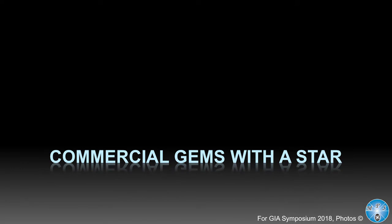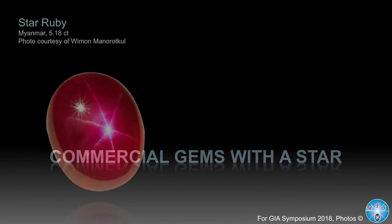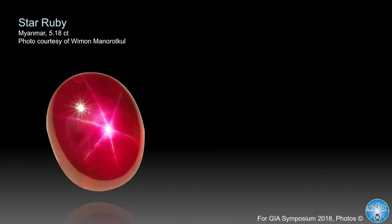We start with the commercial gems of the star. Star Ruby — the queen of stars. Red, the color of passion, the color of love. Mostly they are from Myanmar/Burma and from Sri Lanka. You can have some nice stars from Vietnam, and at last month's September fair in Hong Kong I saw the first very beautiful star ruby from Mozambique — very rare, never published, bright red color.